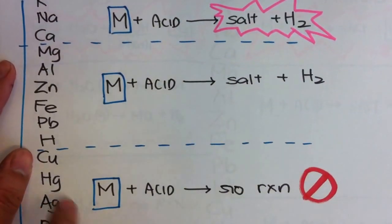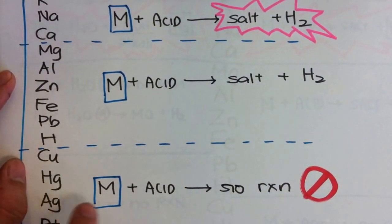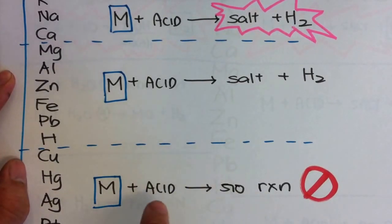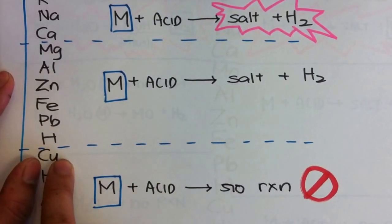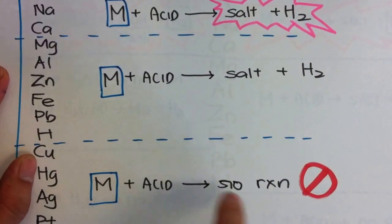And the last category, basically anything that is below hydrogen will not react with acid. So pure copper does not react with acid.